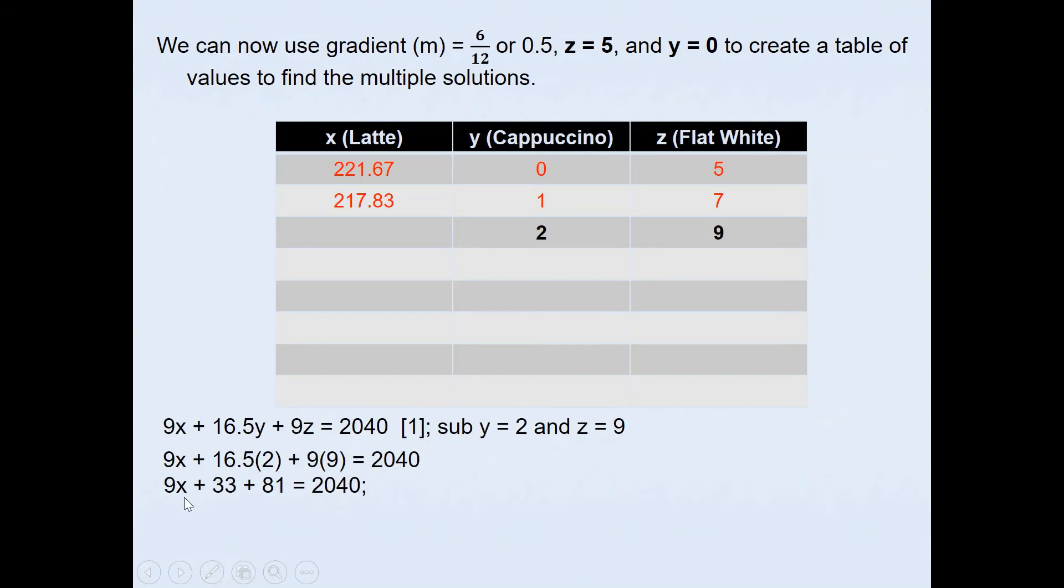If I quickly substitute that in the first equation, substitute 2 and 9, we've got 9X + 33 + 81 = 2040. If I take 33 and 81, which is 114, to the other side, I end up with X value of 214. We've got a whole number value. This tells us that we have one of the solutions, which could be 2 cups of cappuccino, 9 cups of flat white, and 214 cups of latte.